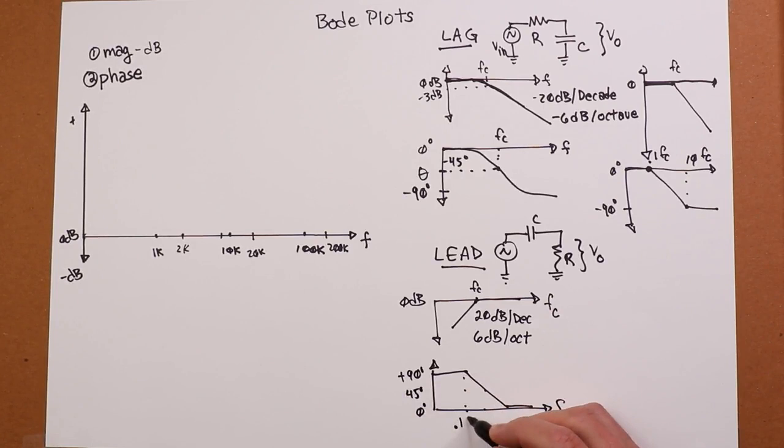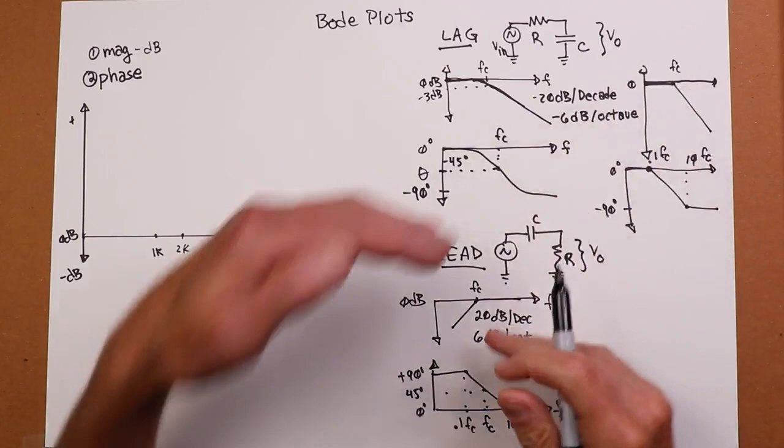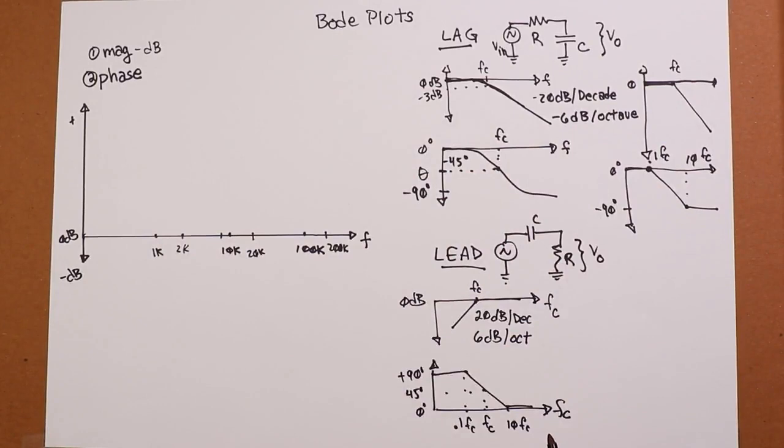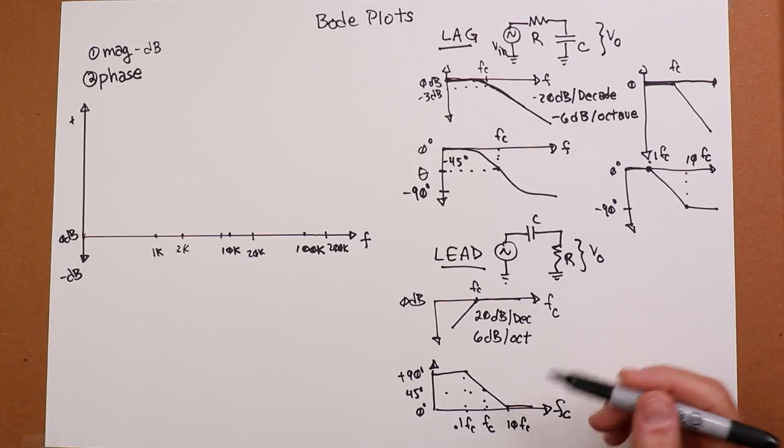So you're plus 90 over here. At fc, you're going to be at 45, and then 0. And again, your breaks are the same: 0.1 fc and 10 fc. So this is sort of a mirror image. This one, you just shift it up and down by 90 degrees. Now, you want accurate values? These are just sketches. We can derive some equations, and there are some nice equations appropriately derived in the text.